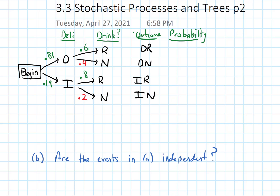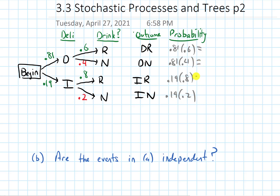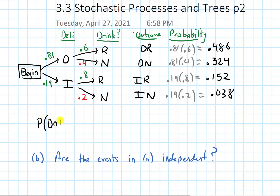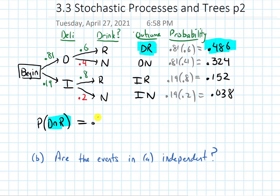To get the outcome probabilities, we multiply the values on the branches. So DR is 0.81 × 0.6 = 0.486. DN is 0.81 × 0.4 = 0.324. IR is 0.19 × 0.8 = 0.152. And IN is 0.19 × 0.2 = 0.038. So if we're after the probability of D intersect R — the probability that she goes to Domenico's and gets a root beer while there — this corresponds to outcome DR, which has probability 0.486. That's our answer to part A.